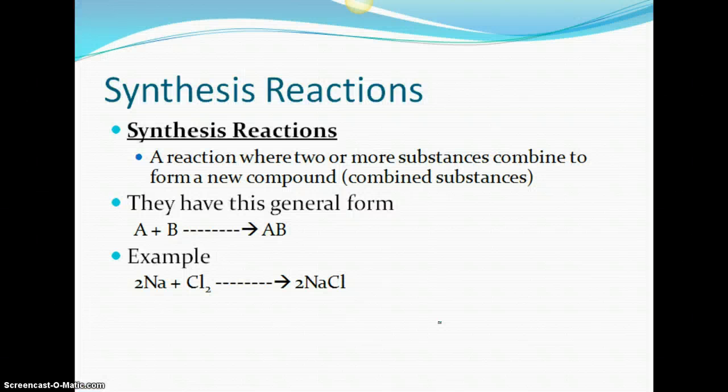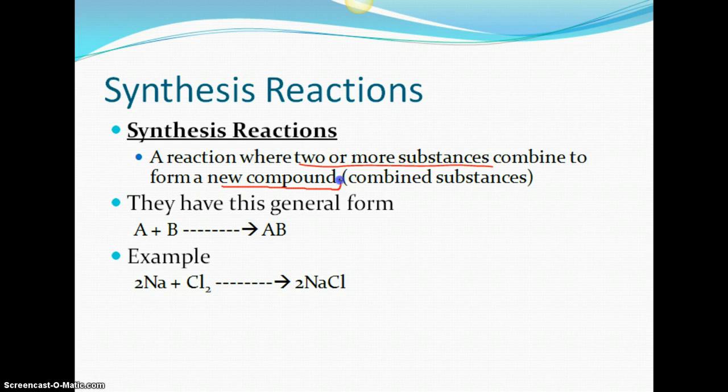So we're going to go over a few reaction types. There's five of them. The first is a synthesis reaction and synthesis should make you think of creating. So you're taking two or more substances and you're combining them to make something new. You're making a compound. So they have this general form of A plus B produces AB. The way that I like to describe it is element plus element produces a compound. So this would be kind of like baking a cake. You then produce one big compound or one big cake at the end.